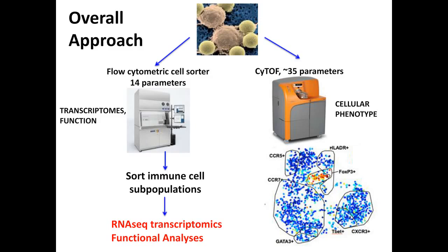Dr. Rao, will you also be doing phospho-flow on the rheumatoid arthritis synovial tissue samples, and what do you think are some of the key signaling components to include? Phospho-signaling analyses are not among our top priorities, although I think they're interesting studies to do. The pathways that would come to mind in terms of responses to inflammatory signals in the joints are key ones of interest, and I'm interested to see what people will find there.